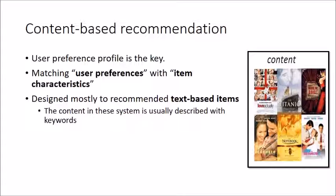The system then matches user preferences with item characteristics. For example, if a user likes motivational videos 75% of the time and a new video is also from the motivational section, the system recommends it. Content-based filtering is designed mostly to recommend text-based items — the content is usually described with keywords. For a movie, keywords might include motivational, comedy, action, thriller, or sci-fi. If no text or keywords are associated with an item, content-based filtering will not work.